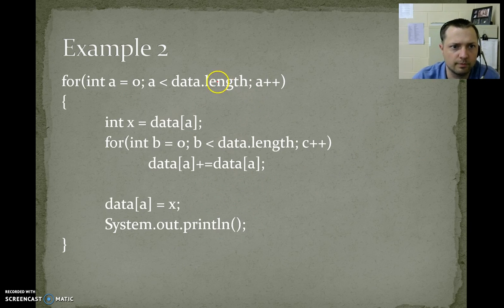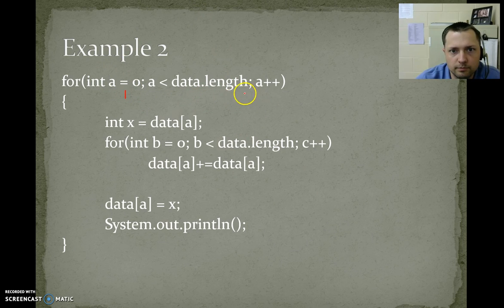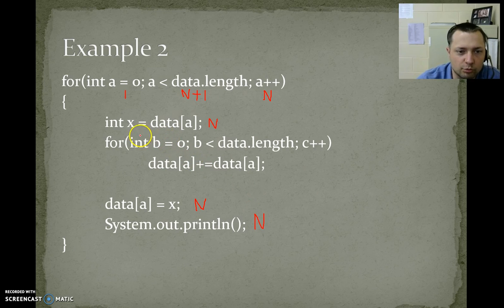Let's move on to our next example. a equals 0 is 1. a less than length. We already figured out that this is going to be n plus 1. It may be different if we had started at a different point, or we had changed differently than a plus plus. But we didn't. So n. Everything inside this loop will happen n times. So this is n. This is n. This is n. Here's where it gets a little bit more complicated.